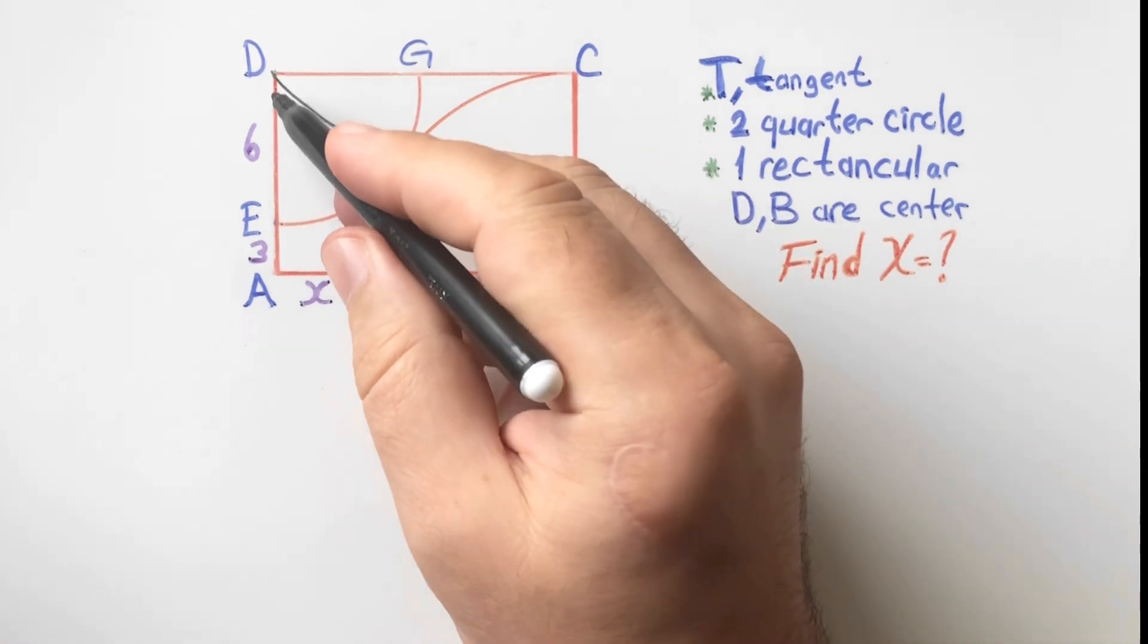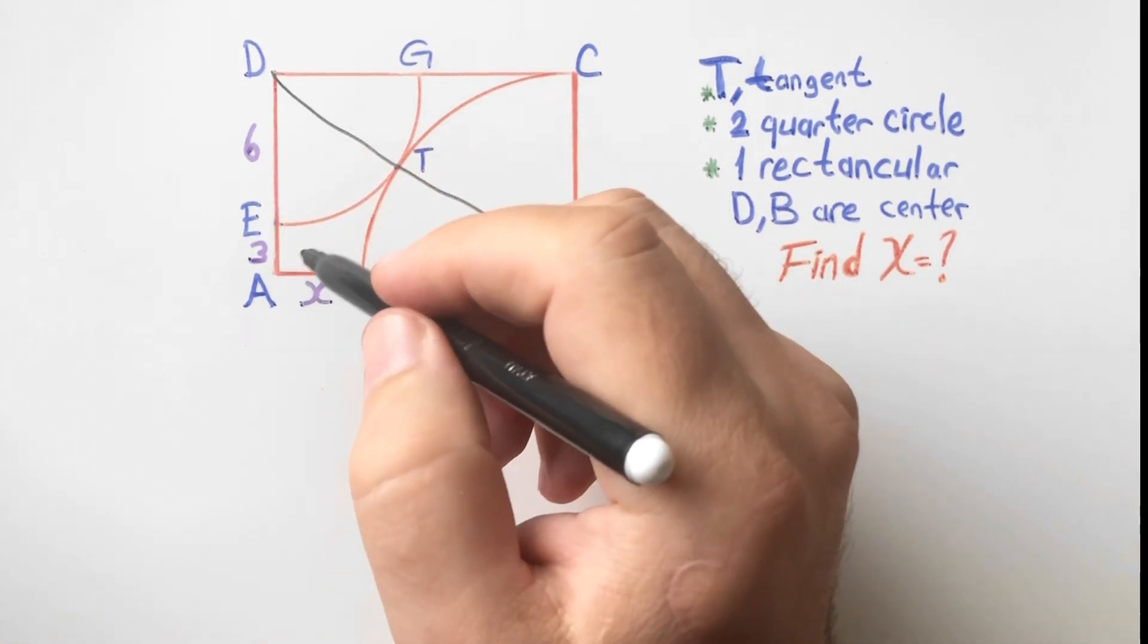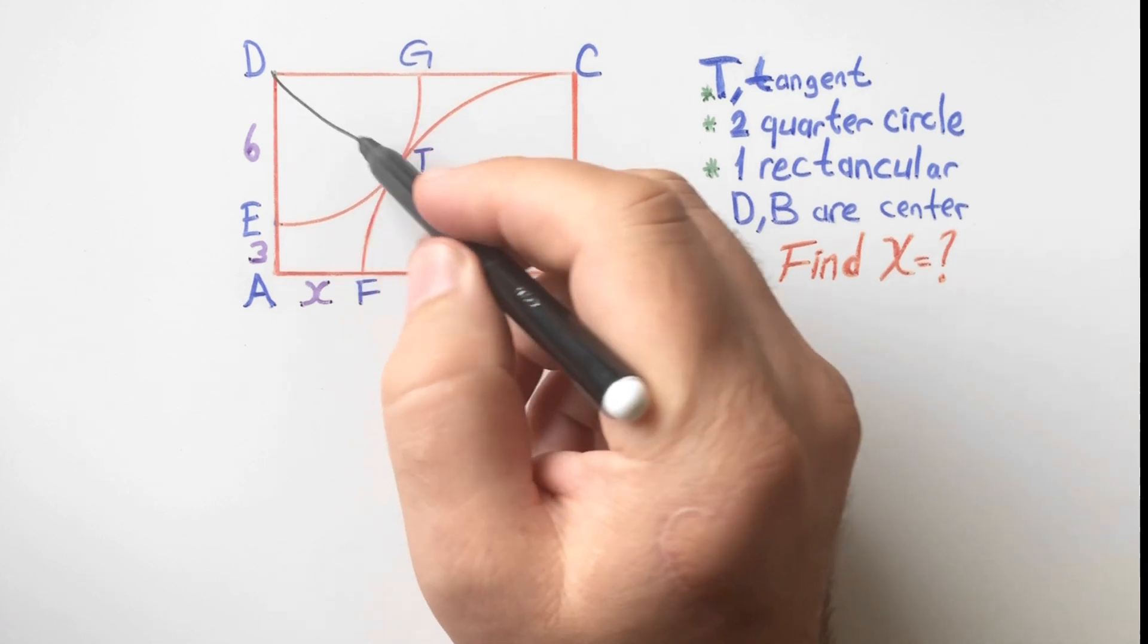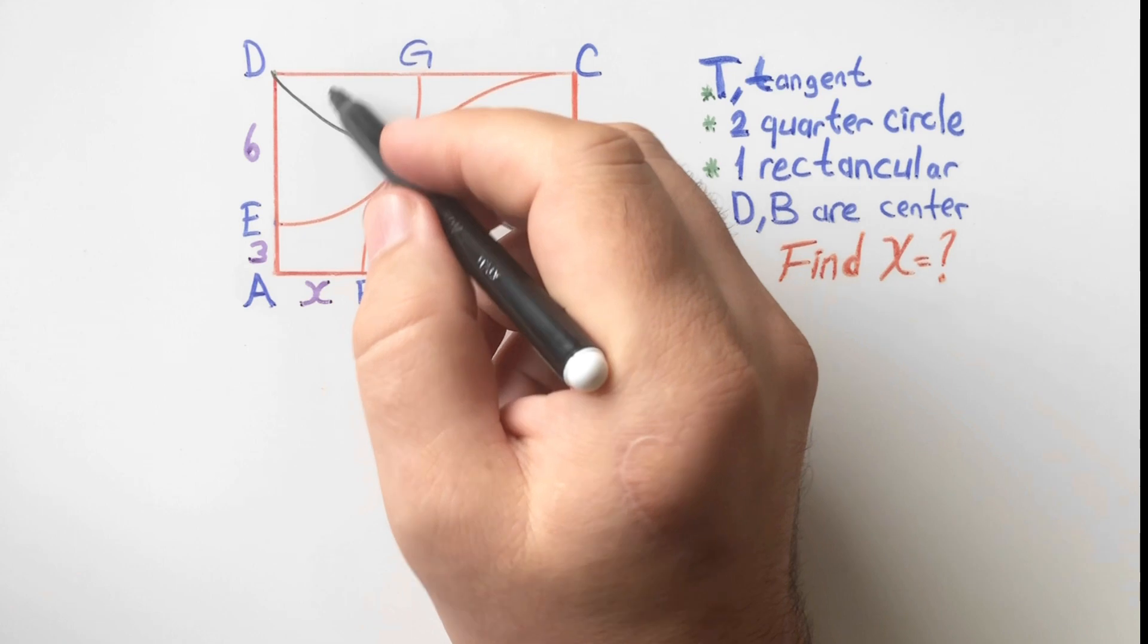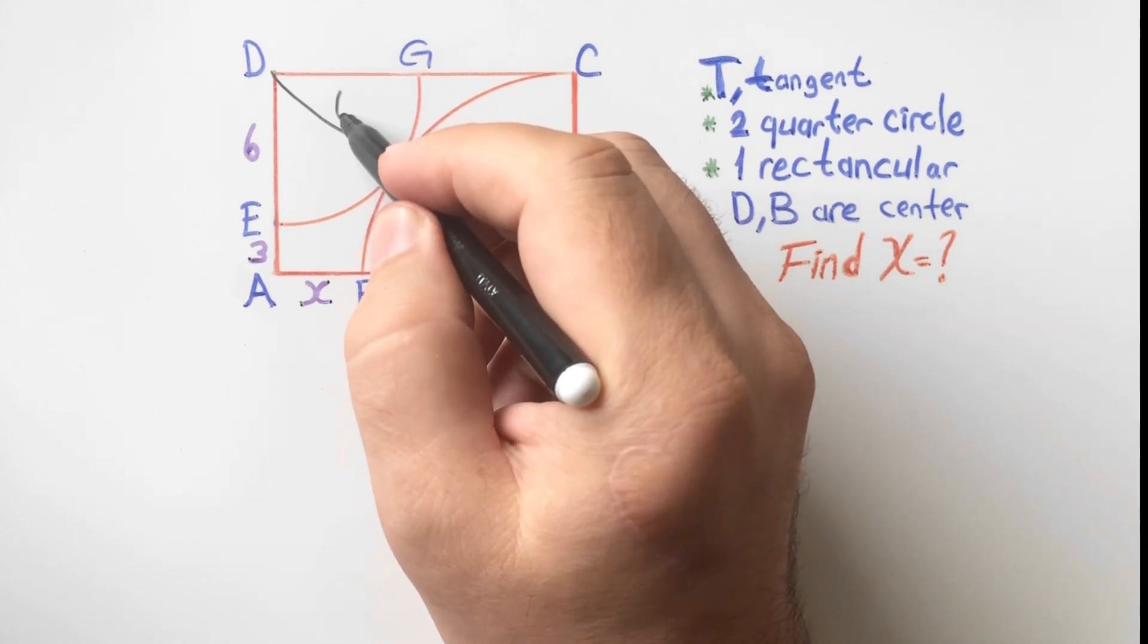So here is six units and these two lengths are radius also, so these are equal to six units.